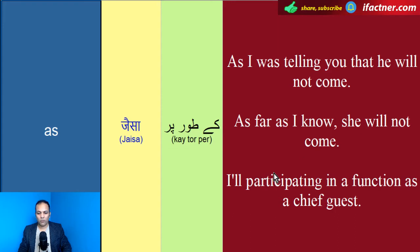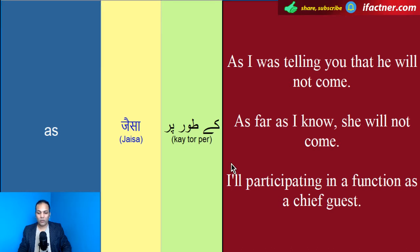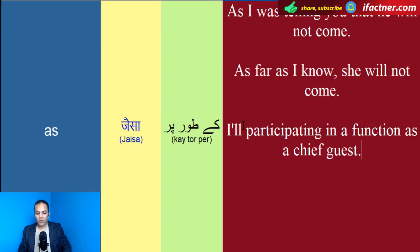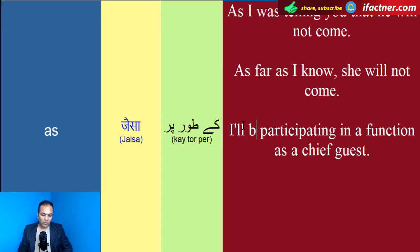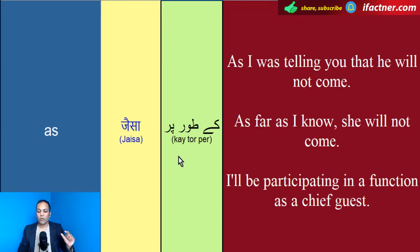Teesra sentence hai: 'I will be participating in a function as a chief guest.' Matlab: mein function mein chief guest ke toor peh participate karoon ga. Yehaan 'as' ka matlab hai 'ke toor peh'.